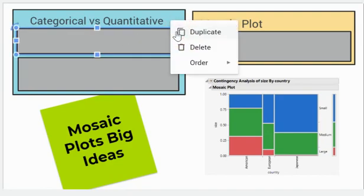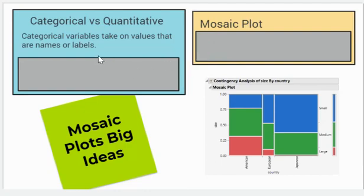The first thing we want to say is that categorical variables take on values that are names or labels. That's one of the big things about categorical variables—they name things or they label things.